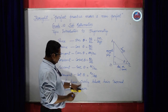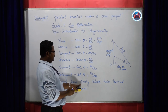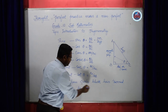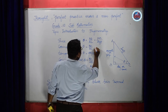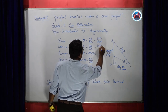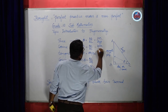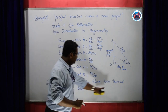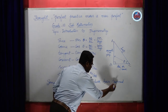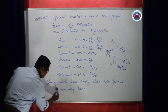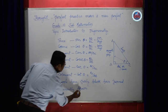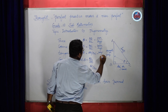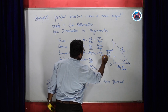Then the second one is cos theta, which is base by hypotenuse. And then the third one is tan theta T, which indicates tan theta is perpendicular by base.